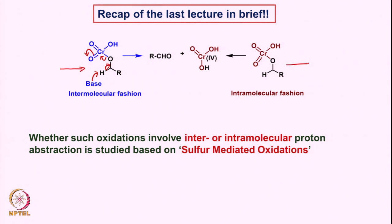This was one possibility considered after the alcohol reacts with chromic acid and forms this intermediate. Alternatively, the same intermediate can also undergo an intramolecular proton abstraction in this fashion. So from chromium 6 we start and get chromium 4 as one of the intermediates, and the aldehyde comes from the corresponding alcohol. This is what we discussed last time.